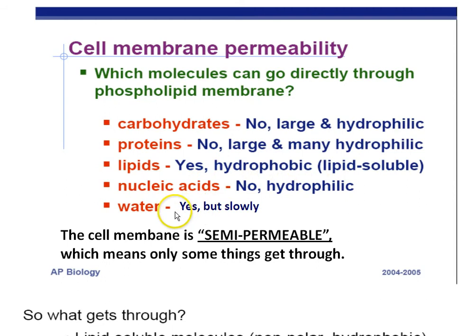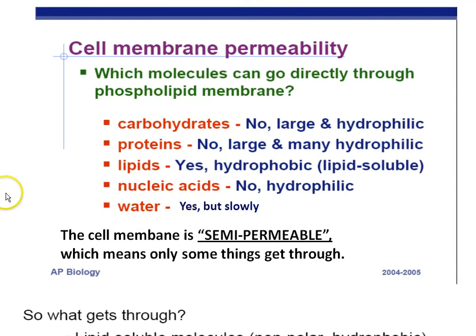Water can get through. Water is polar and hydrophilic, however it's small — only two hydrogen and one oxygen — and it is able to squeeze by those phospholipids in the phospholipid bilayer. However, it only moves through slowly. In order to move large quantities of water, we need special protein holes called aquaporins.